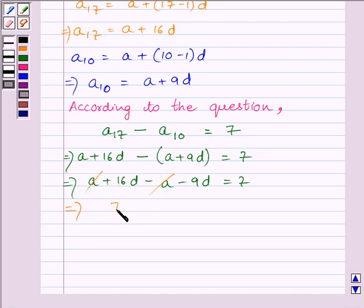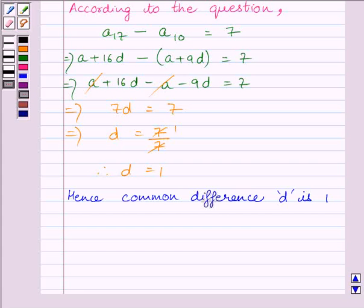So we get 7D equals 7. This implies D equals 7 divided by 7, so D equals 1. Hence, the common difference D is 1.